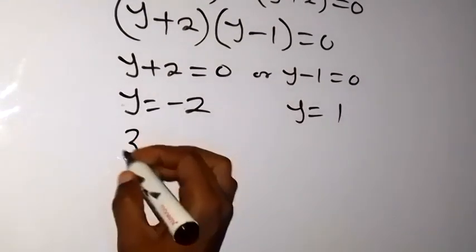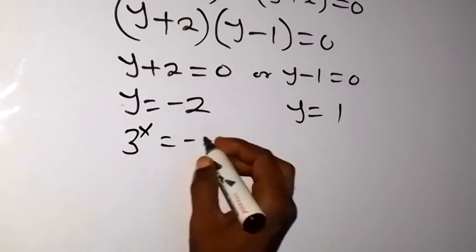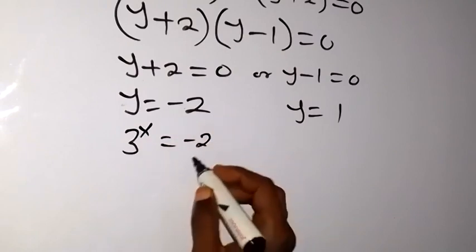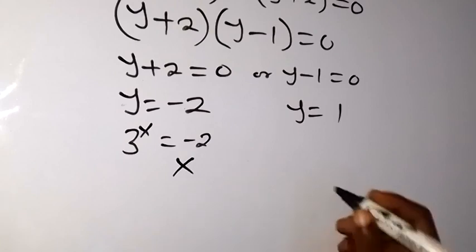Here, 3 raised to power x equals to minus 2. There can't be any solution here because we can't have negative.